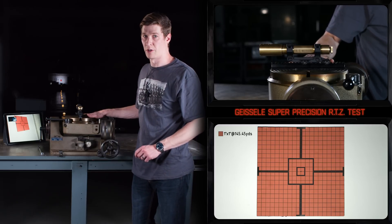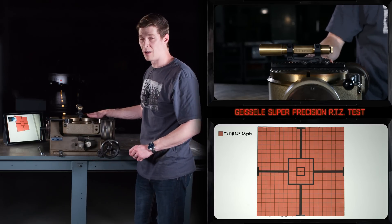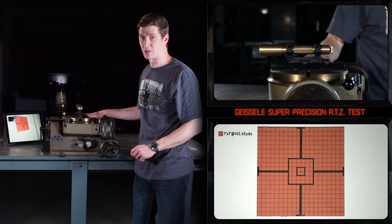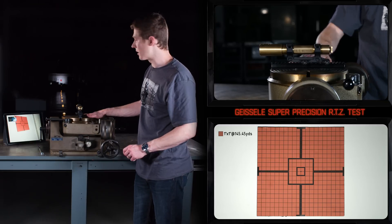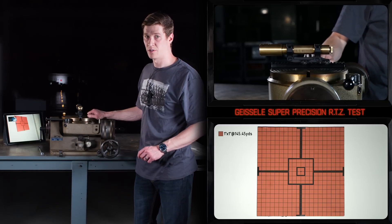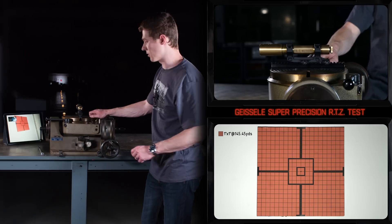Our test fixture is a rotary table. It's going to allow me to adjust my X and Y directions on the target, which is approximately 140 yards down range. The target has one-inch squares on it.